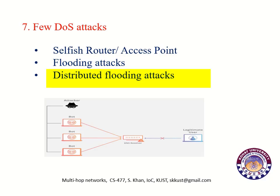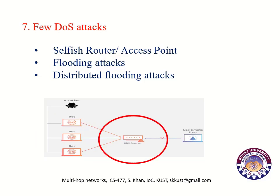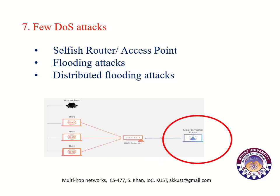Distributed Flooding Attacks. When many attacking nodes or attackers flood traffic towards an important target node, it is known as a Distributed Flooding Attack. It is very difficult to handle Distributed Denial of Service Attack as such collaborative and distributed flooding attacks consume all network resources, and legitimate users cannot access network resources at all. In this diagram you can see three different infected nodes flooding traffic toward the target node, causing its resources to overflow so that the legitimate user is not capable to access network resources.